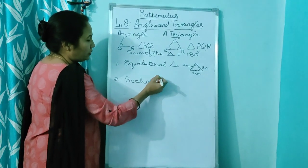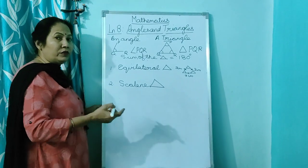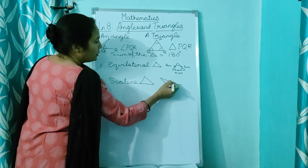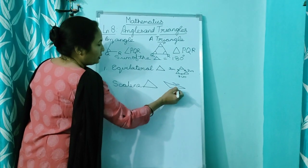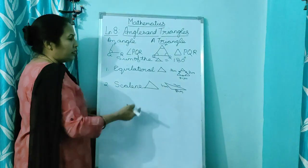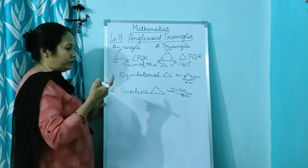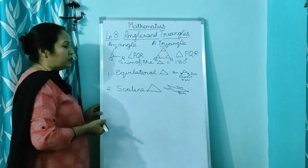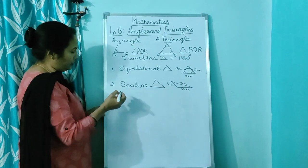Now children, in scalene triangle all three sides are of different length. Here I am drawing it: this is 7 centimeters, this is 8 centimeters, and this is 4 centimeters. So children, when you have all three sides of different length, that is called scalene triangle.